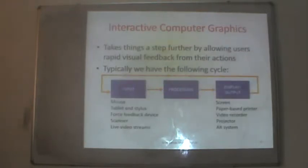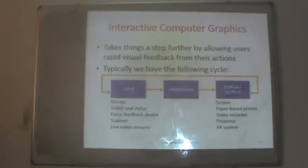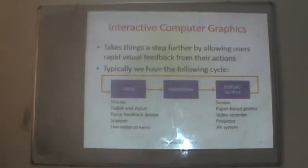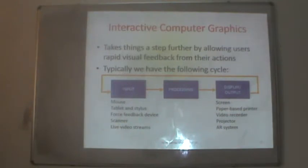Interactive computer graphics involves three components: input, processing and display units. The input unit is composed of mouse, tablet and stylus, force feedback devices, scanners, and live video streams. Display units include screens, paper-based printers, video recorders, projectors and audio recording systems. Any interactive system is purely based on these three major components.